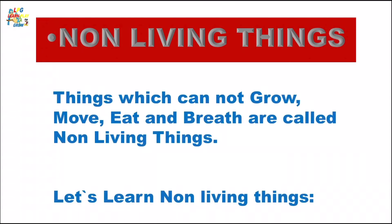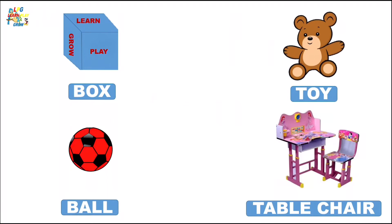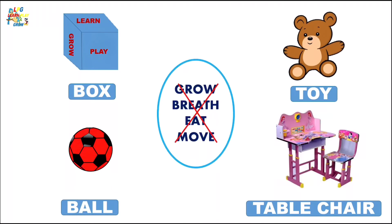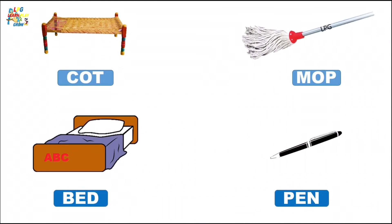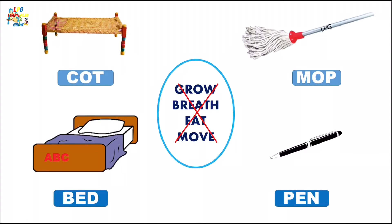Let's learn non-living things. Box, toy, ball, table and chair are some examples of non-living things because they cannot grow, breathe, eat and move. Cot, mop, bed and pen are some examples of non-living things because they cannot grow, breathe, eat and move.